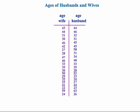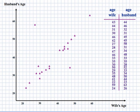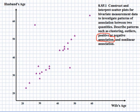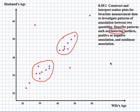Another context looks at the relationship between the ages of husbands and wives. After surveying couples and plotting the scatter plot, it's clear there is a positive association: if the wife is young, so is the husband, and if the wife is older, so is the husband. There is also some clustering, as the surveyed couples tended to be in their late 20s, early 30s, and 40s.